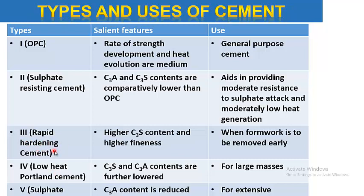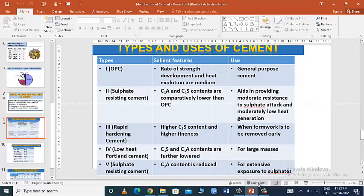Type 3 is rapid hardening cement: C3S content is higher and of higher fineness, with a higher percentage; used when formwork is to be removed early, such as at water-retaining structures. Type 4 is low heat Portland cement: C3S and C3A contents are further lowered; used for large masses like dams and bridges. Type 5 is sulfate-resisting cement: C3A content is reduced; used for extensive exposure to sulfates.